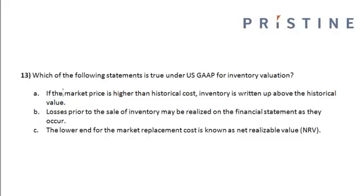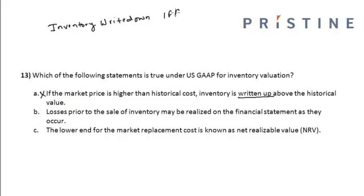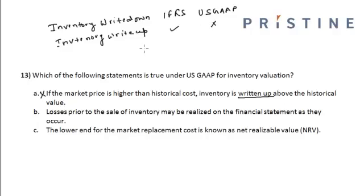This option is incorrect because inventory write-up is not allowed under US GAAP. Inventory write-down is allowed under both IFRS as well as US GAAP, whereas inventory write-up is only allowed under IFRS but not under US GAAP. So under US GAAP, what is the criteria to check if an inventory write-down is to be carried out?